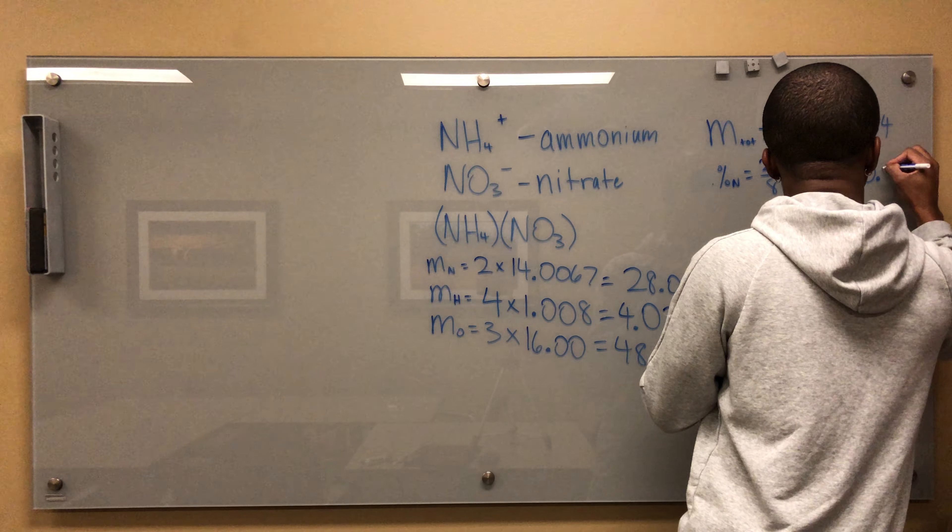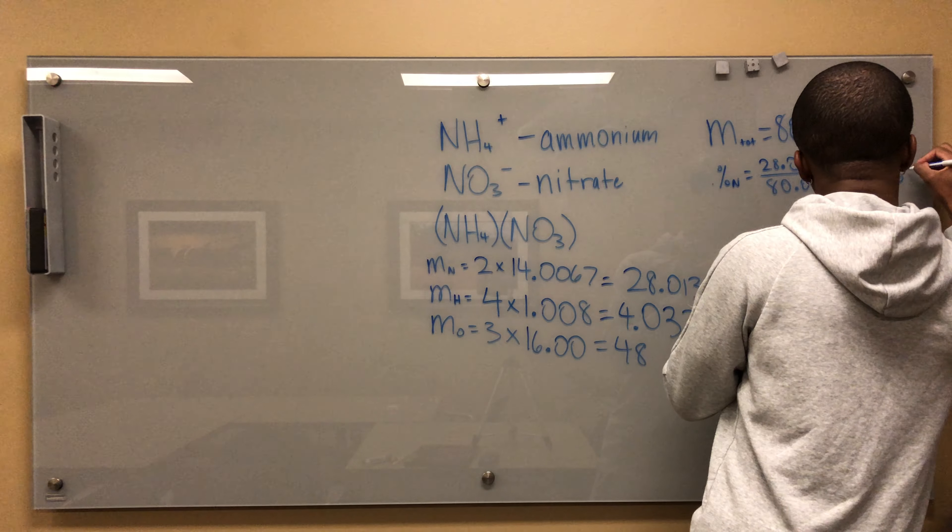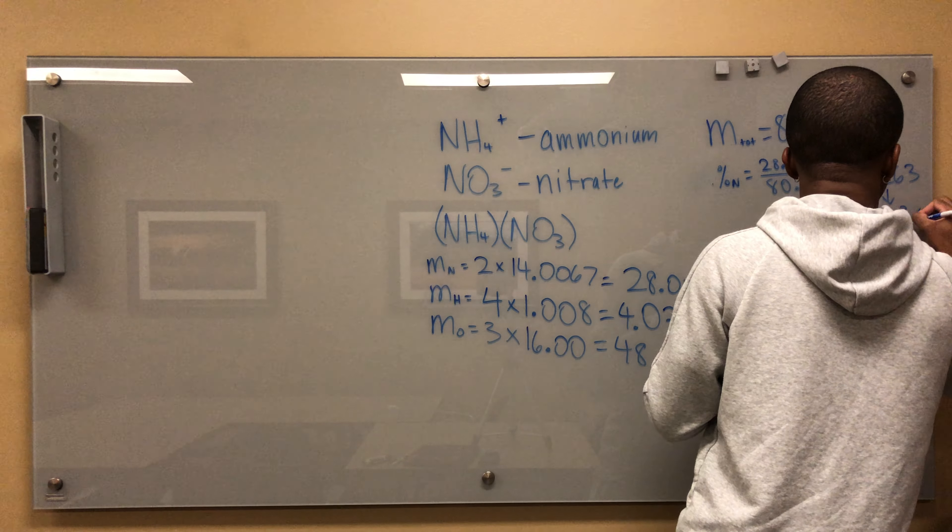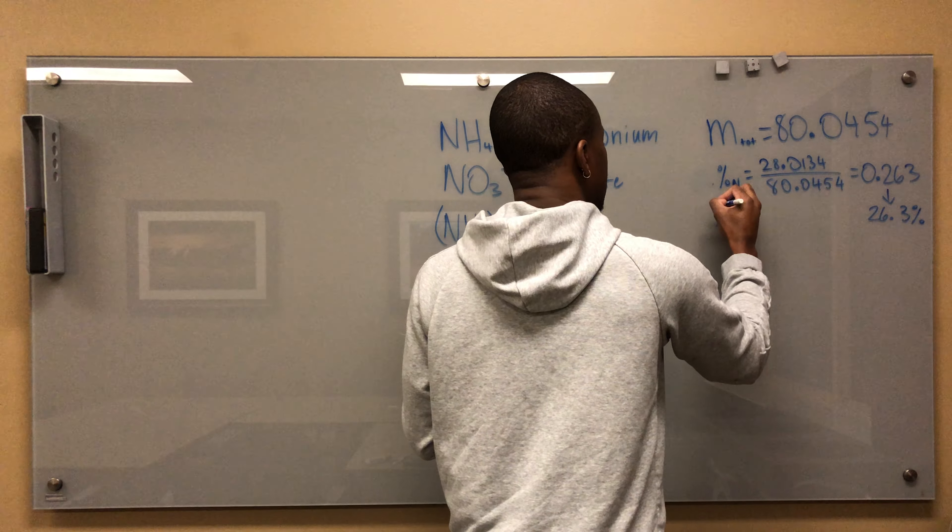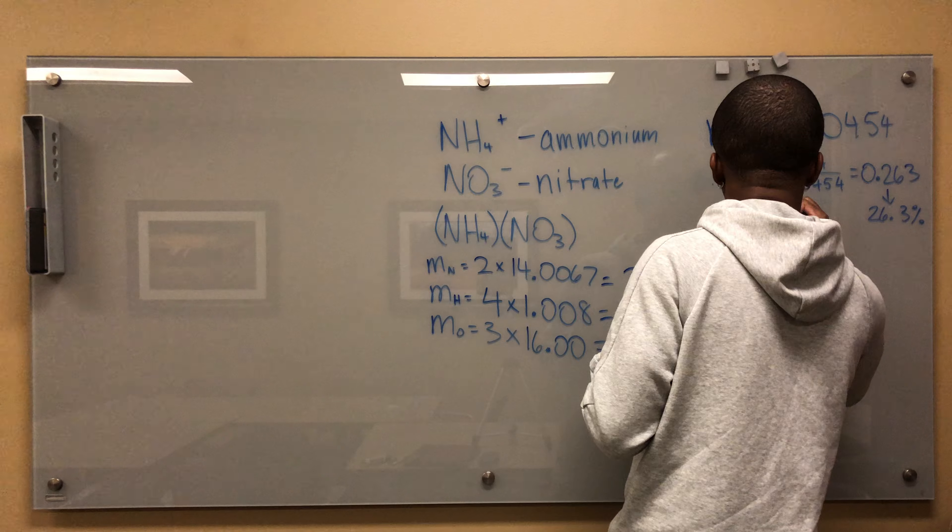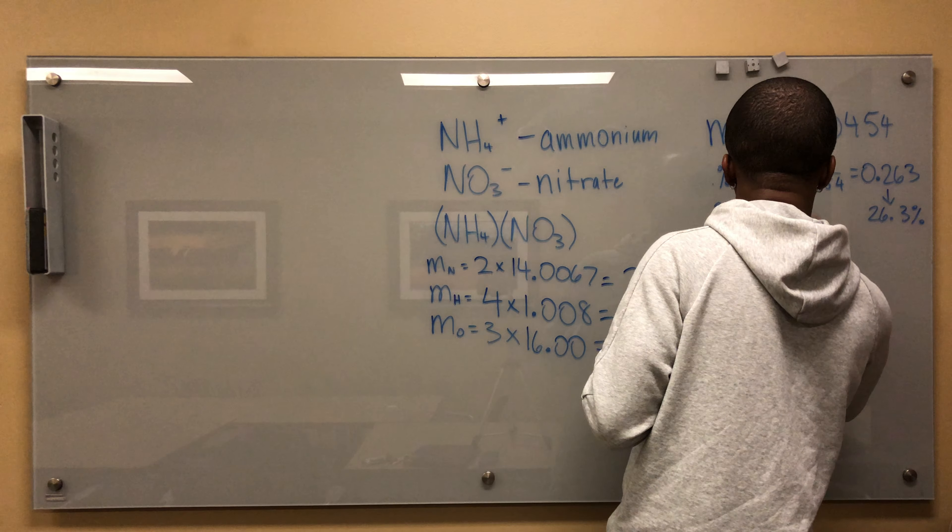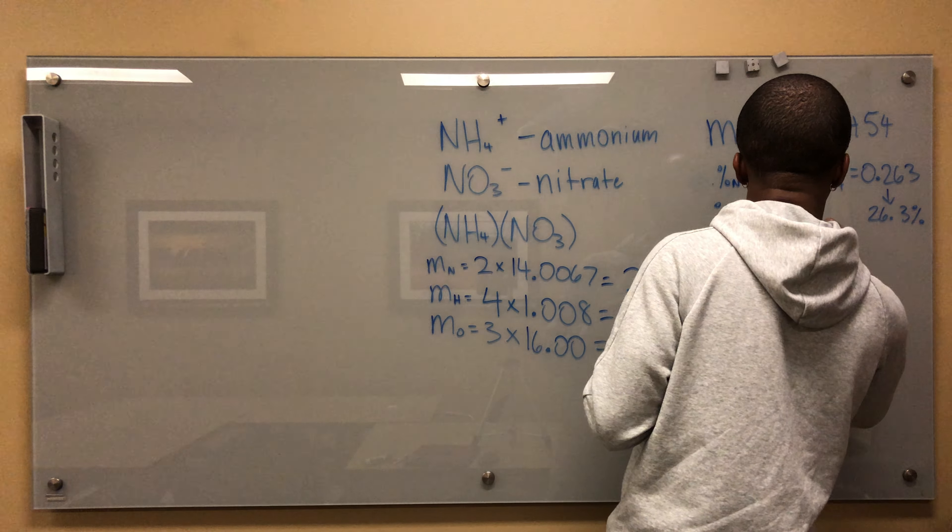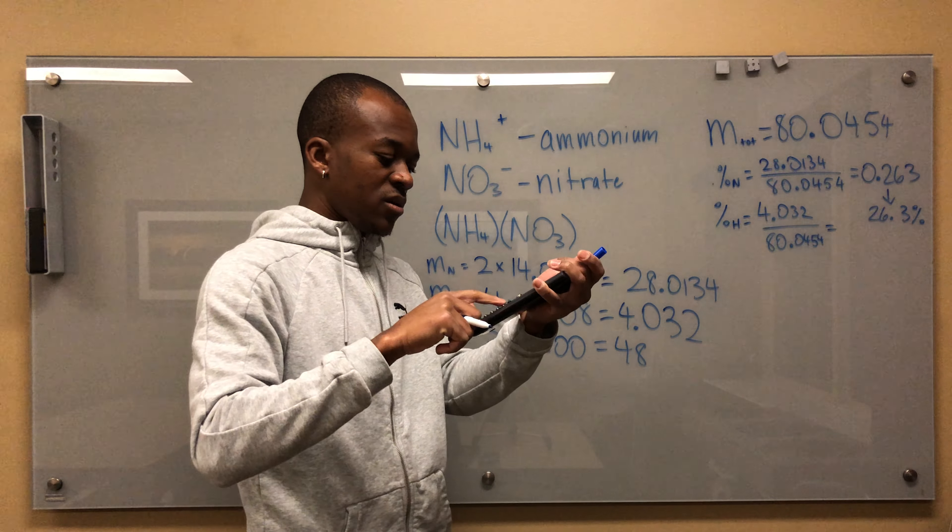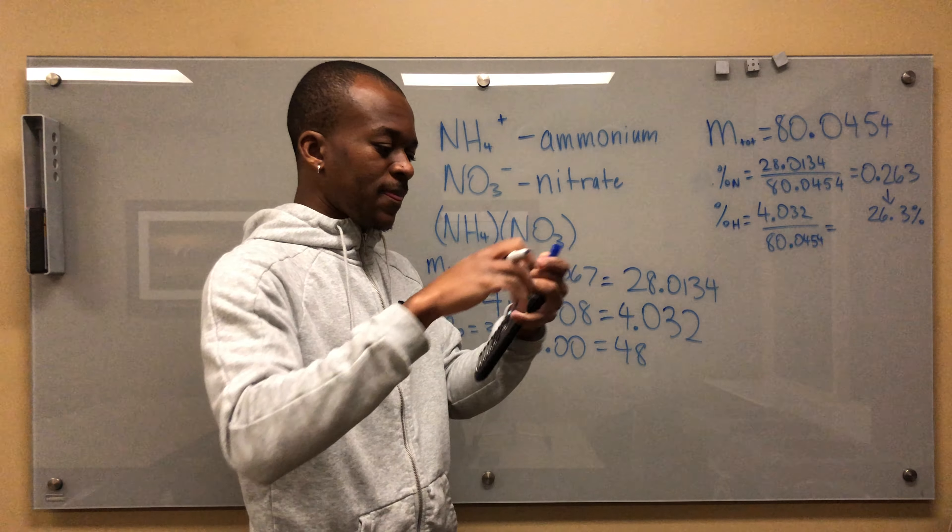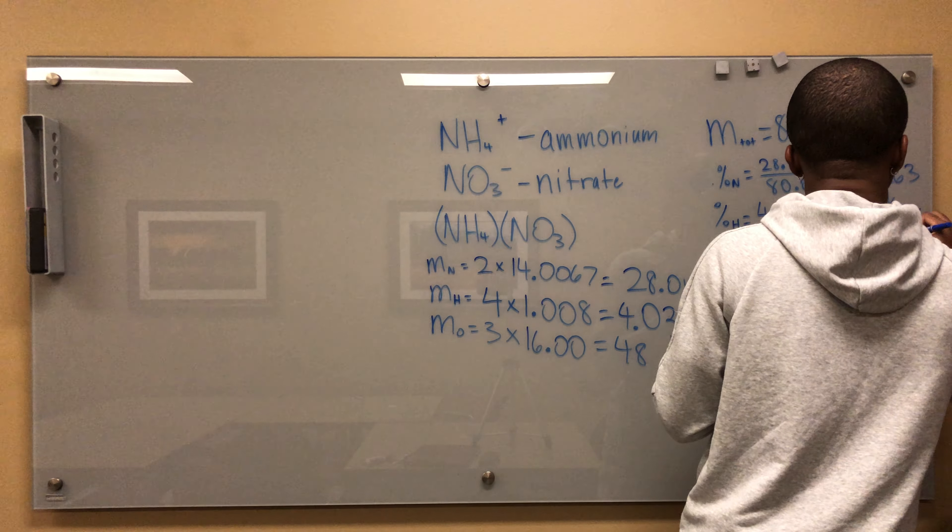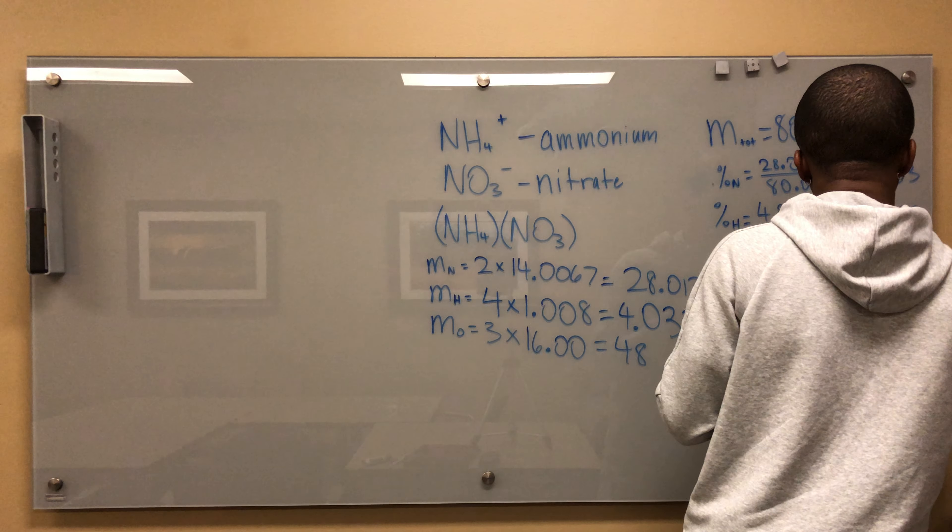Now my percentage of hydrogen is going to be 4.032 over 80.0454. We can see how small of a number we'd expect this to be. 0.050 - that's about 5 percent.